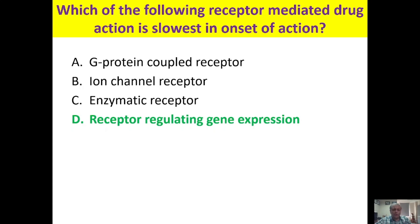Hormones act through gene expression regulation, requiring significant time. On the contrary, if the question asks for the fastest onset, the answer is the ion channel receptor — the drug combines with the receptor, the incorporated ion channel immediately opens or closes, and the effect occurs in milliseconds to seconds.